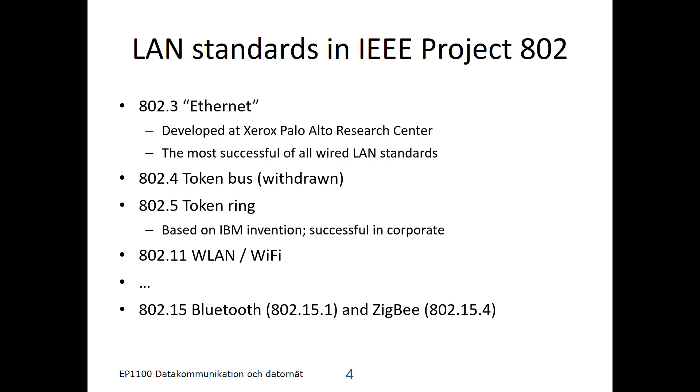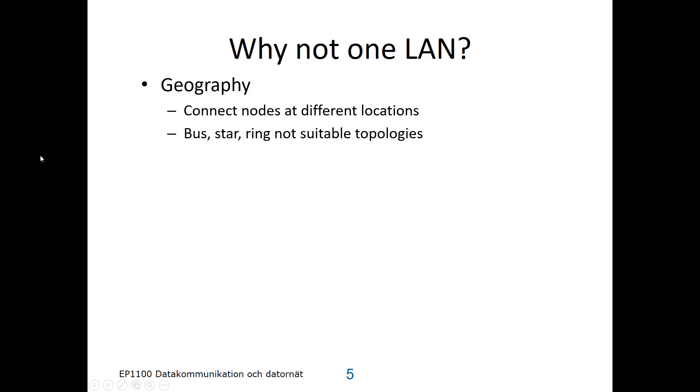So, why not one LAN? There's a geographic aspect to it. You would like to perhaps connect nodes at very different locations. And bus, star, or ring might not be the suitable topology for such a network.